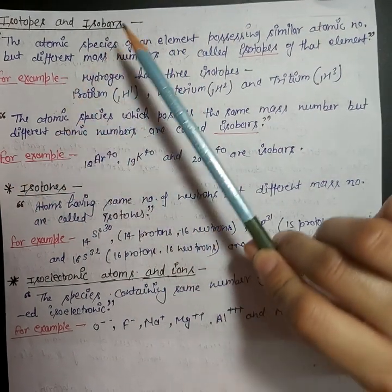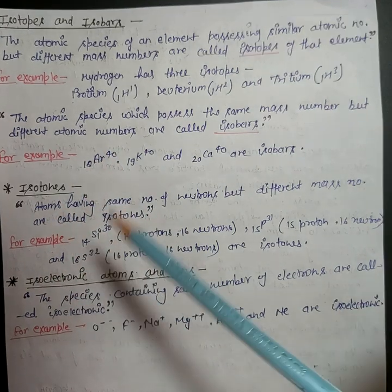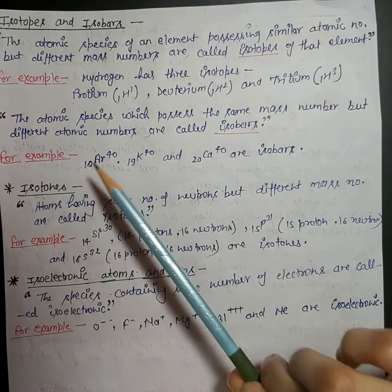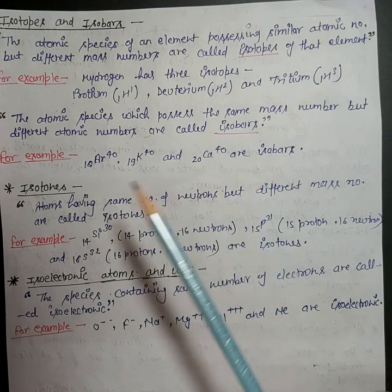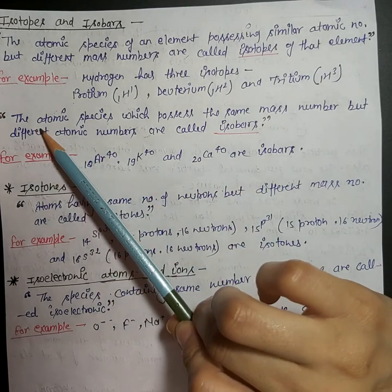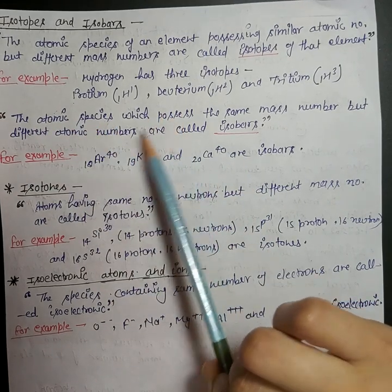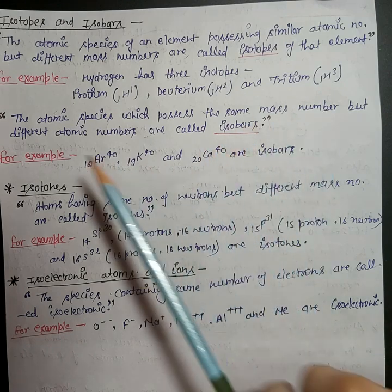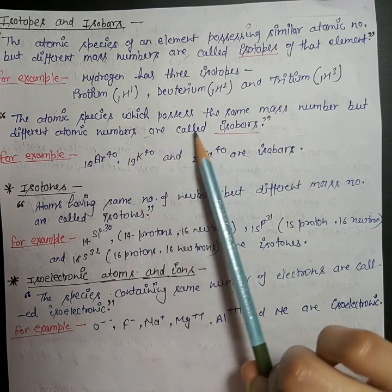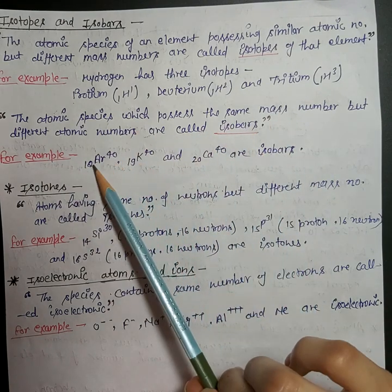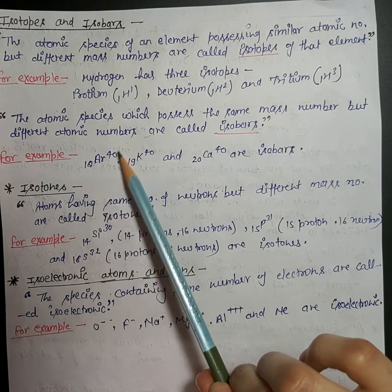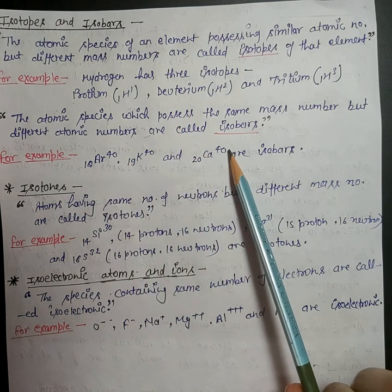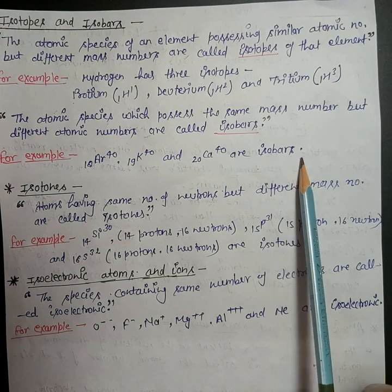What are isobars? Unlike isotopes, isobars have the same mass number but different atomic number. The atomic species which possess the same mass number but different atomic number are called isobars. For example, ¹⁸Ar⁴⁰, ¹⁹K⁴⁰, and ²⁰Ca⁴⁰ are isobars.